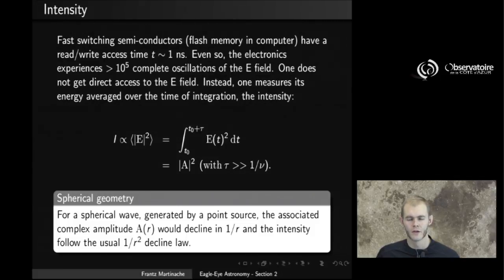And it is so large that it turns out to be almost impossible to actually sense the electric field. If you look at our current technology and look at the fastest switching semiconductors, things that are used, for example, in flash memory that you have in your computer right now, they typically have a read-write access time that can be as short as about one nanosecond, that is 10^-9 seconds. Even with such fast switching electronics, by the time it takes you to do one single read-write access, the electronic, if it were used to record the electric field, would have experienced about 10^5 complete oscillations of the electric field. So that tells you that we are never going to be able to directly sense the electric field when we operate at the visible.